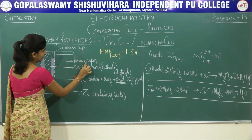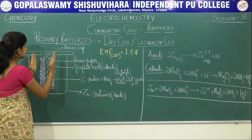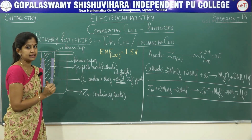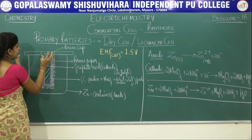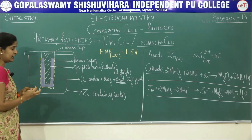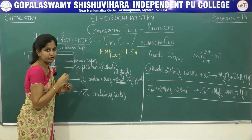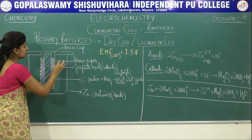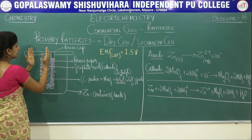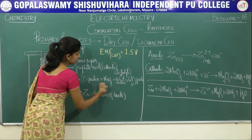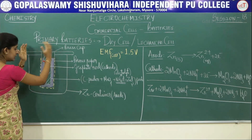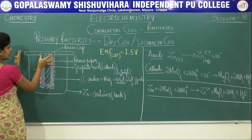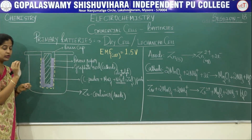The porous paper acts as a salt bridge inside the battery. The whole setup is sealed and the graphite rod has a brass cap — brass being a very good conductor of electricity. The cathode is the graphite rod surrounded by the electrolytic paste, enclosed in the large zinc container whose walls act as the anode. The EMF of this dry cell is 1.5 volts, which it produces constantly throughout its lifetime.